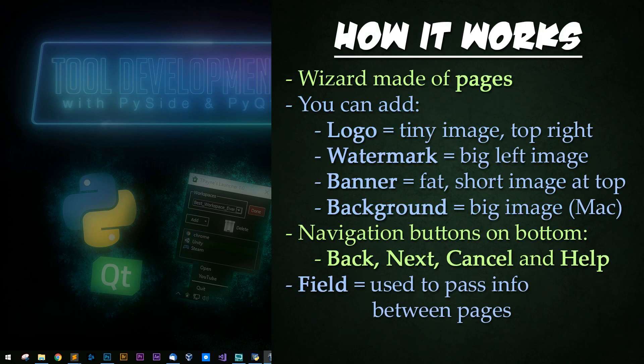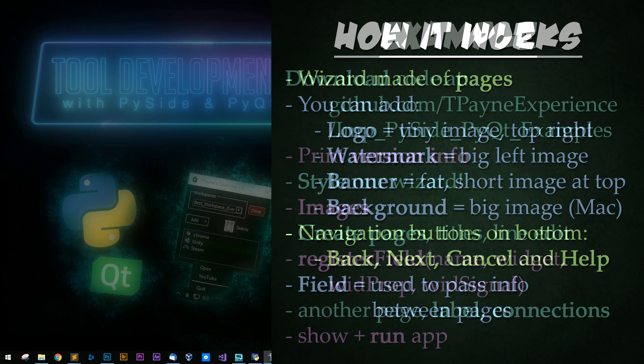How it works: the whole window is a wizard and is made up of wizard pages. The window starts blank and can have the following added in: a logo, which is a tiny image that appears in the top right; a watermark, that's the big left image; the banner, that's the top, fat, short image; or the background image, which is just for Mac users. At the bottom are navigation buttons for back, next, cancel, and optionally help. You can have required fields the user must fill out in order to unlock the next button.